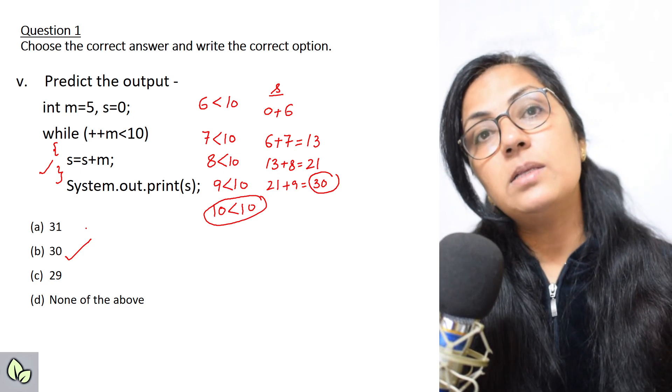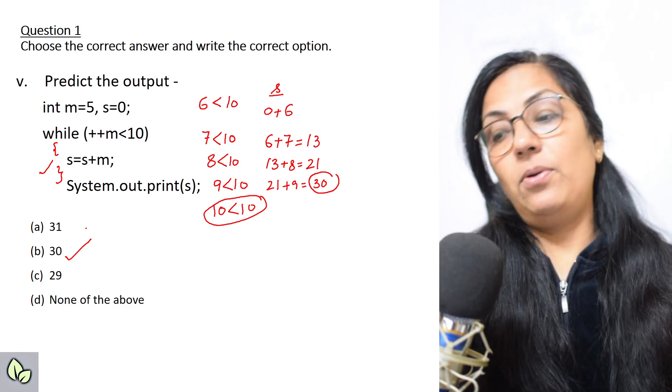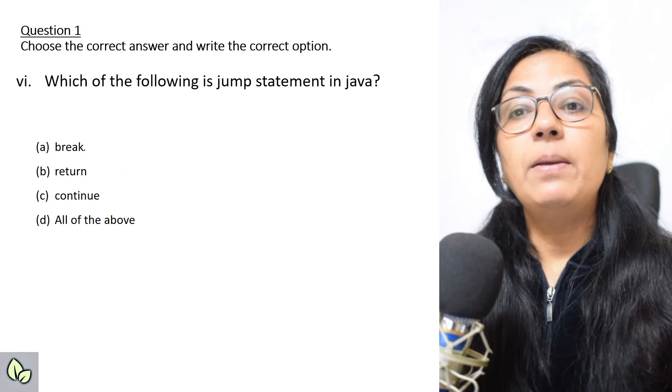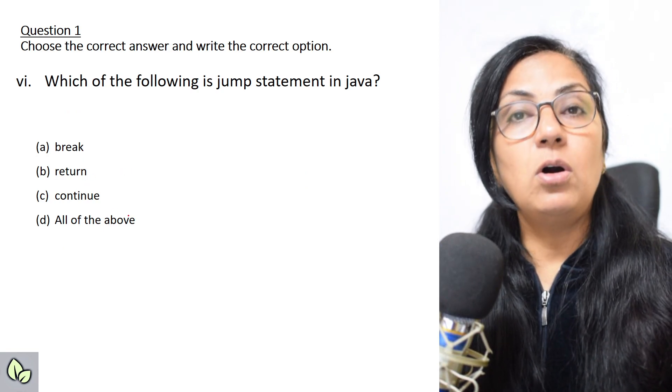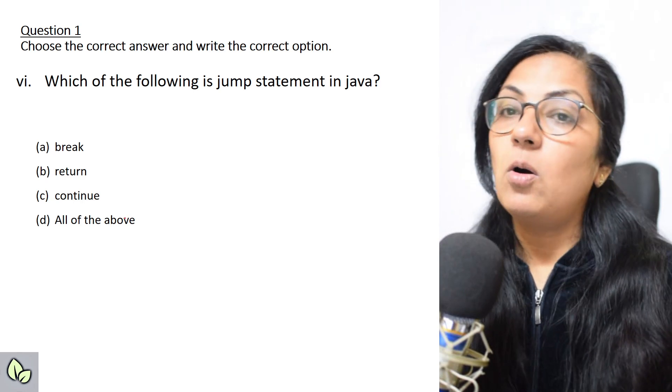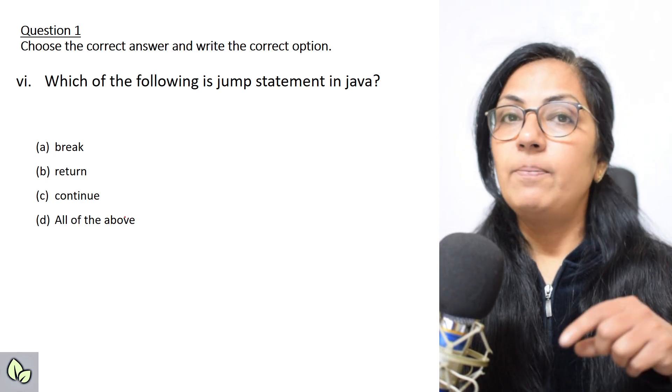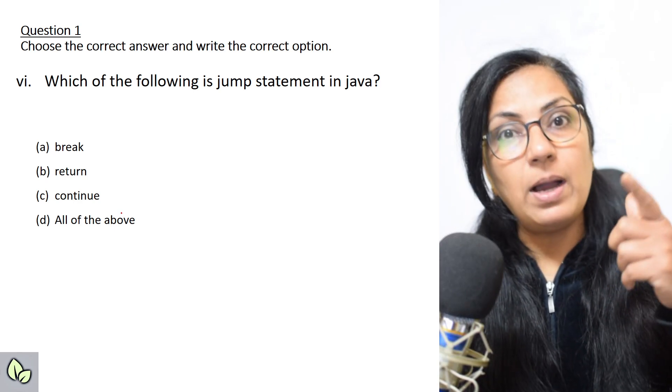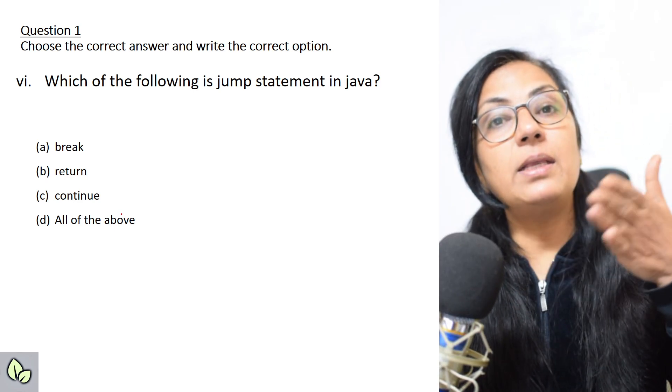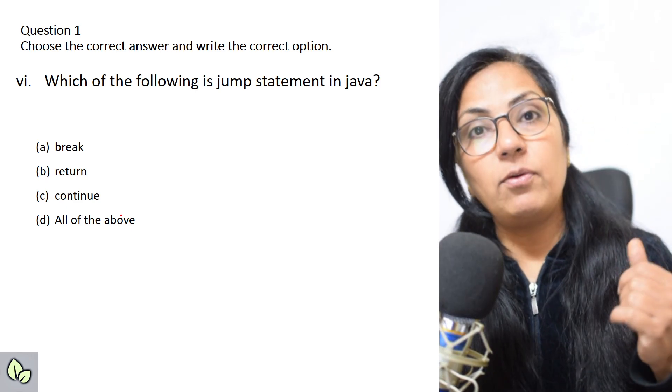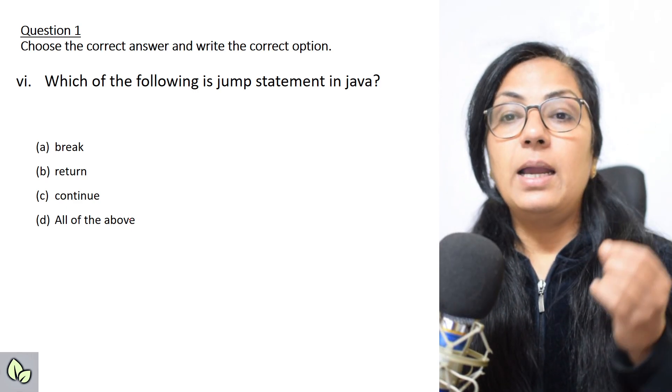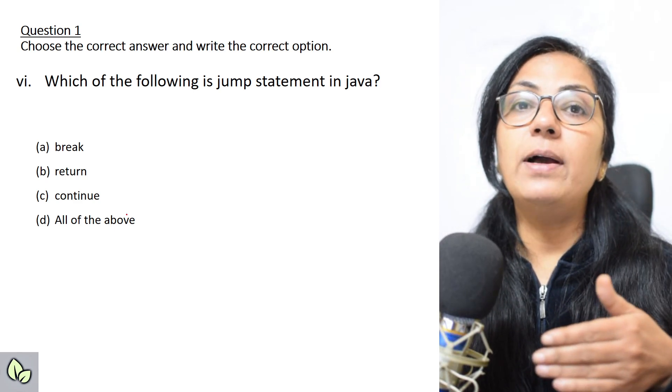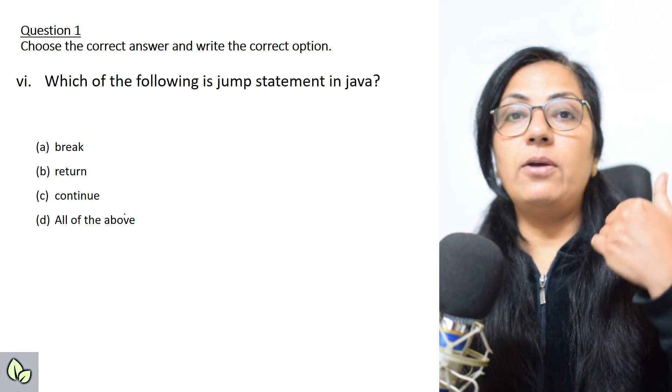Which of the following is a jump statement in Java? Break, return, continue, all of the above. All these are jump statements. Break statement takes you from one point to another point. Continue, without execution of remaining statements, takes you to the beginning of the loop body. Then return, we have done in user-defined functions from one function to another function. So all these are jump statements.